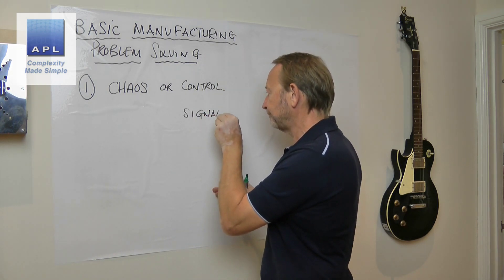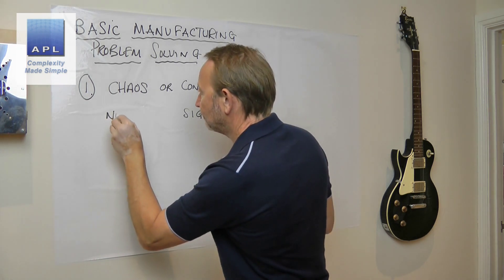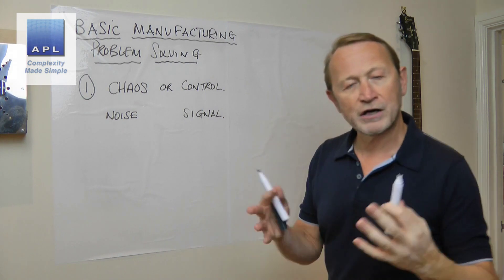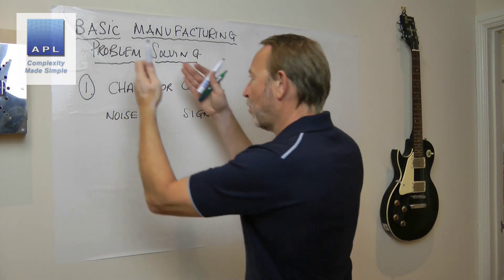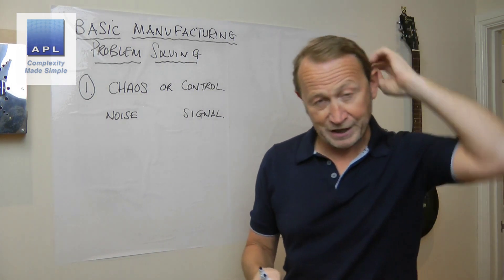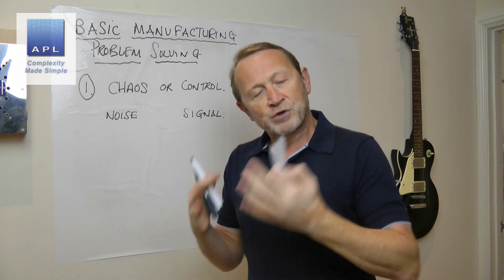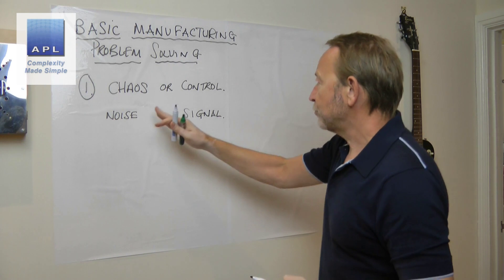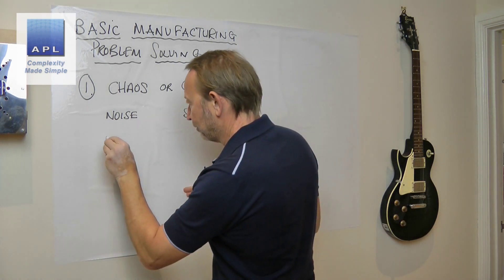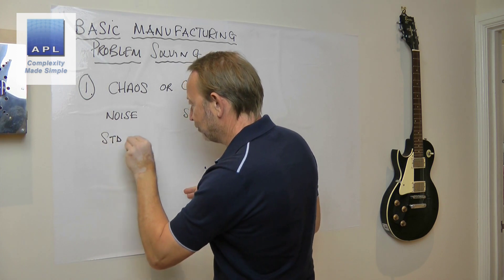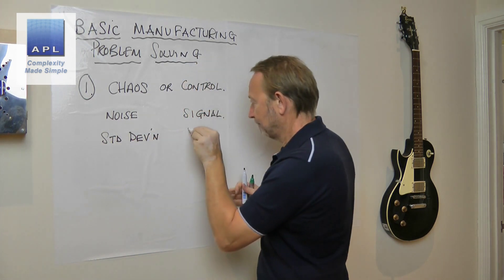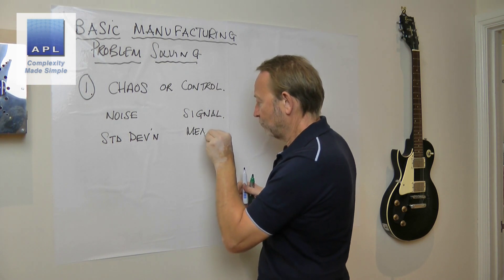Another way of saying this: are you trying to work on the signal, or are you trying to work on the noise? So if you've got a high defect rate, is the problem chaos — is it noise? Or is it control — is it signal? So: is it chaos or control, is it noise or signal? What's another way to look at this? Is it standard deviation or is it mean?